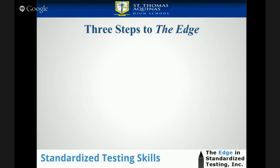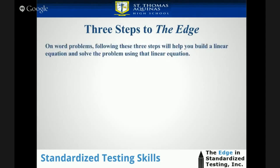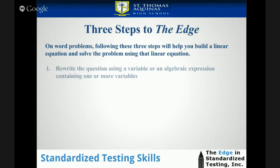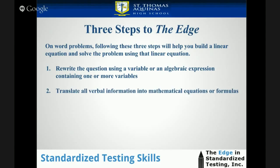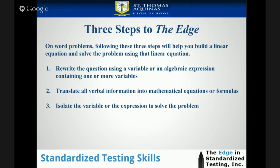Three steps to the edge. On word problems, following these three steps will help you build a linear equation and solve the problem using that linear equation if necessary. Step 1: Rewrite the question using a variable or an algebraic expression containing one or more variables. Step 2: Translate all verbal information into mathematical equations or formulas. Step 3: Isolate the variable or the expression to solve the problem.